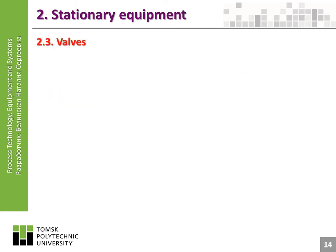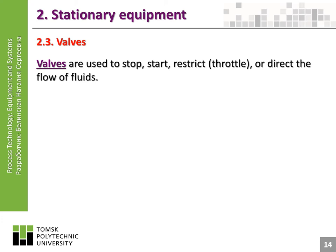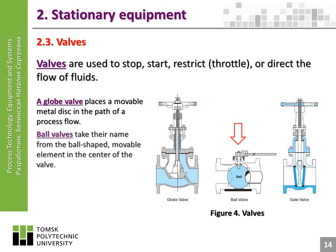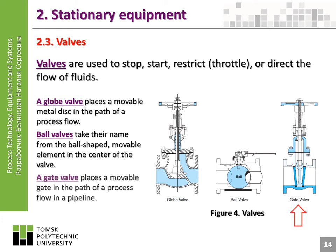Valves are used to stop, start, restrict, throttle, or direct the flow of fluids. A globe valve places a movable metal disk in the path of a process flow. Ball valves take their name from the ball-shaped movable element in the center of the valve. A gate valve places a movable gate in the path of a process flow in a pipeline.